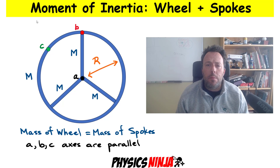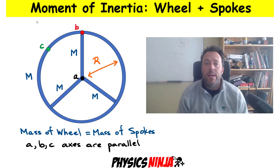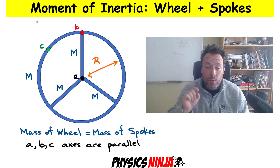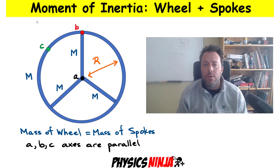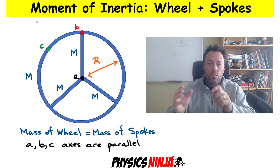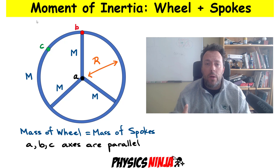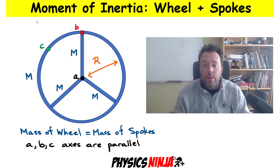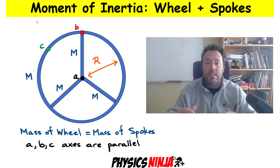Hi everybody, Physics Ninja here. Today's problem, we're going to look at calculating the moment of inertia of this wheel, which has three spokes. The goal is to calculate it with respect to three different axes. Axis A goes right through the center of mass of the object. Axes B and C are along the rim. We're going to assume that the mass of each spoke is M, and it's also equal to the mass of the wheel.